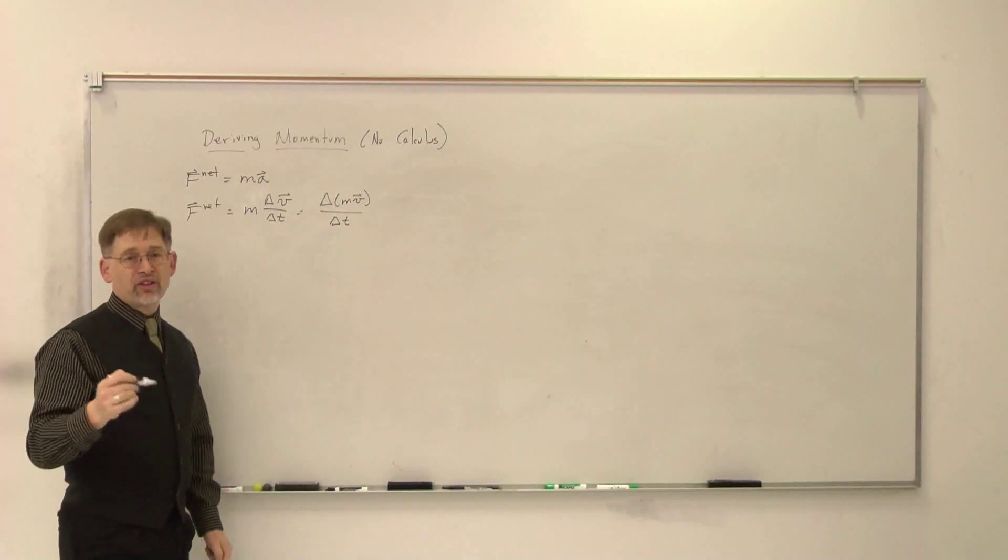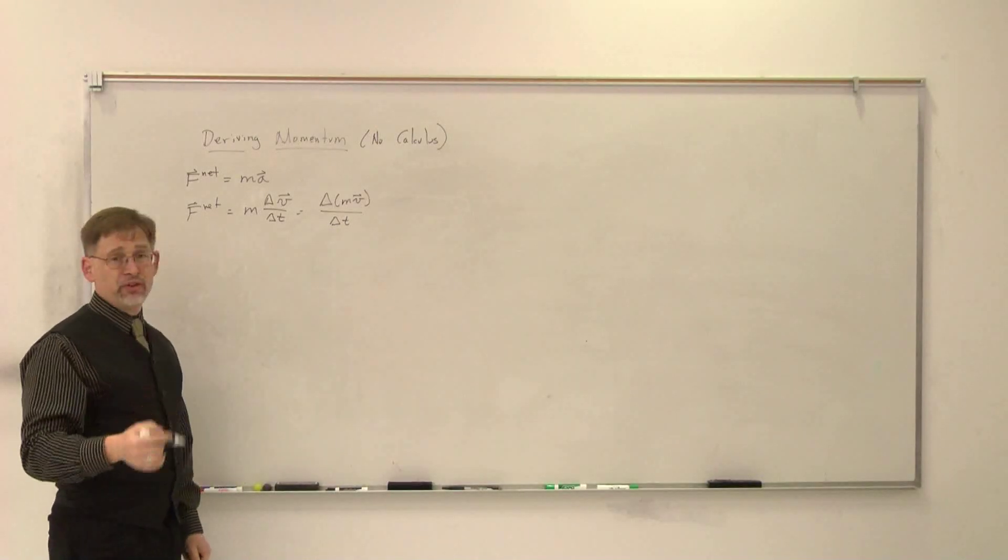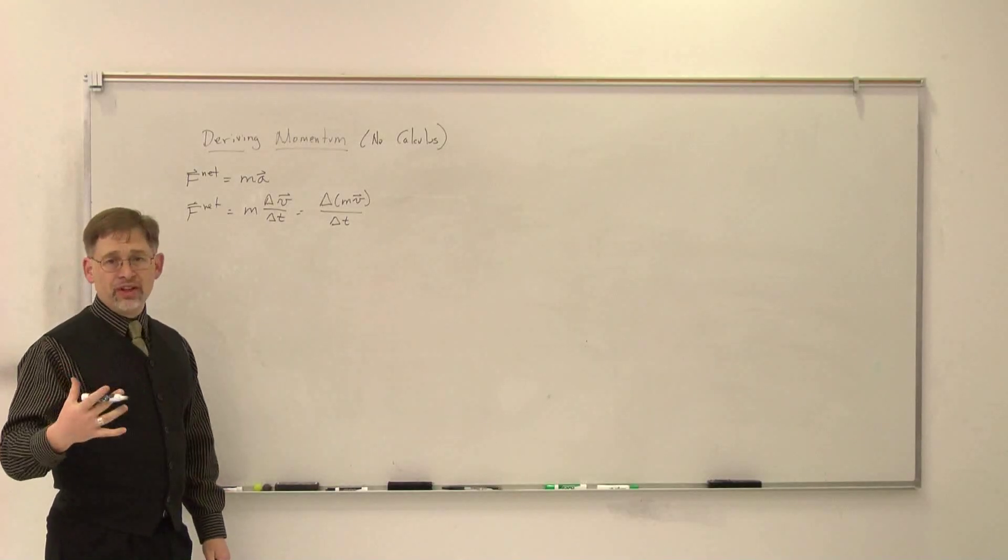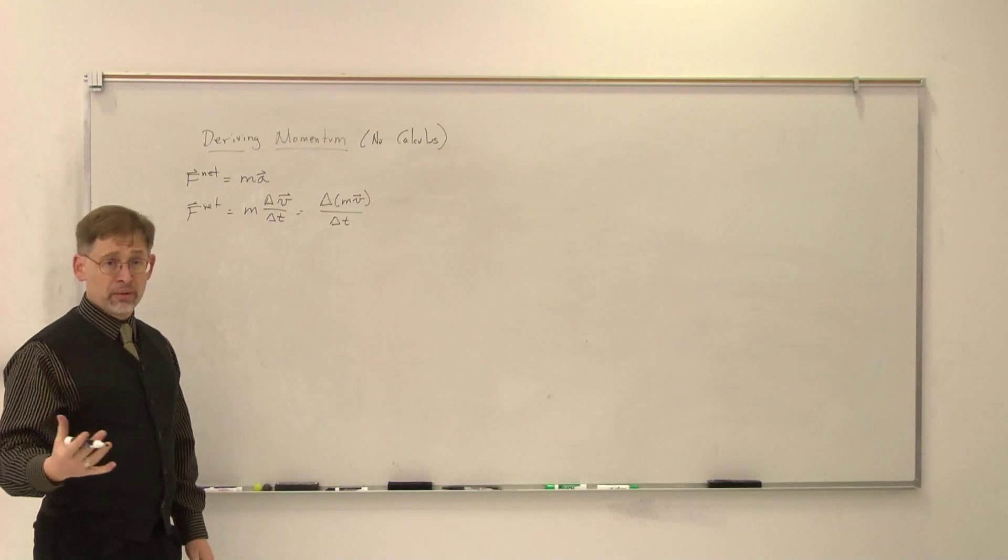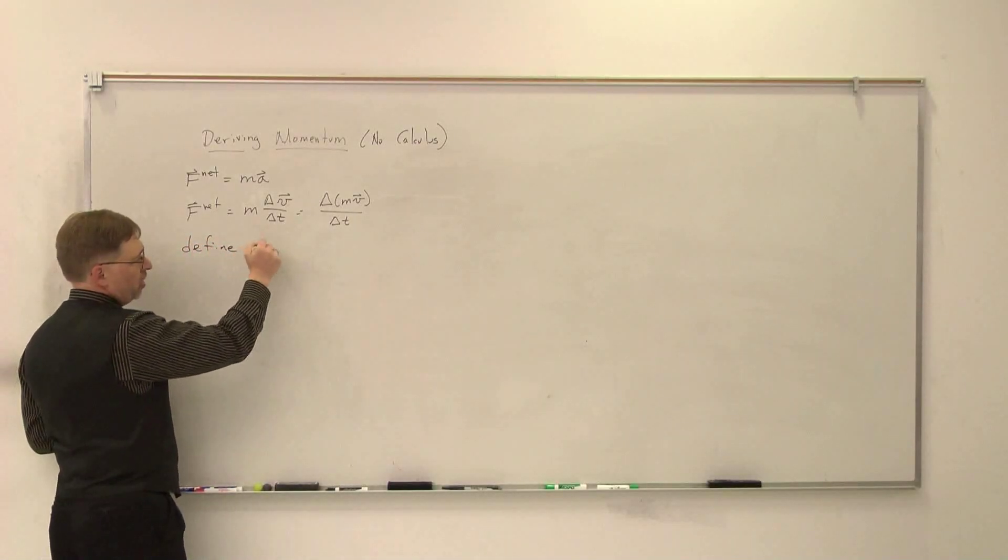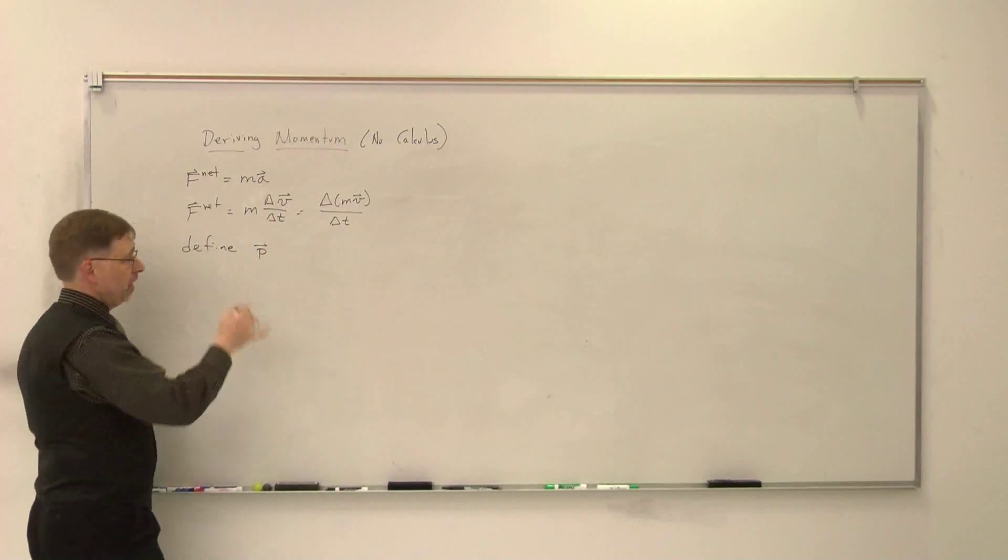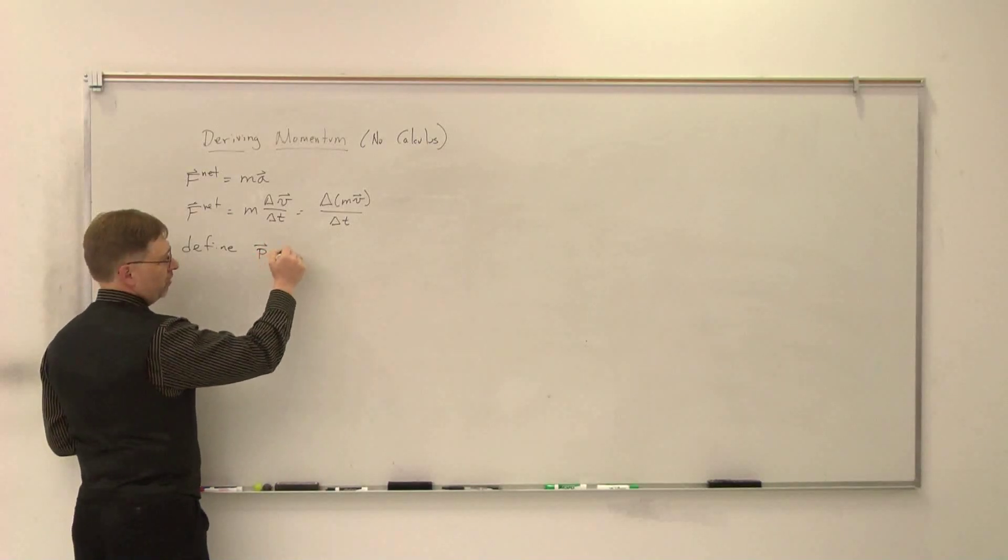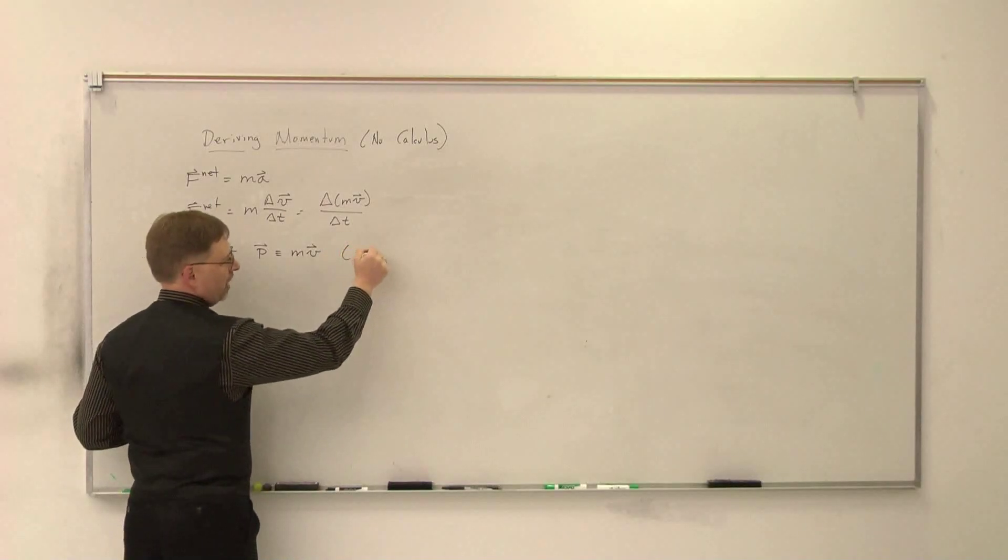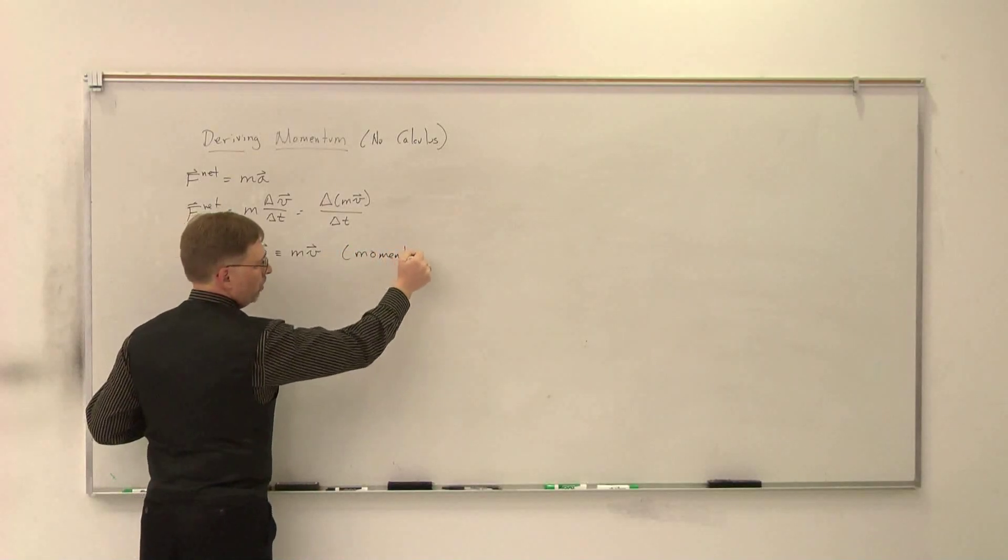But I can rewrite this as the change in M times V over the change in time. Now, that turns out to be a really useful thing to be able to do. And this is actually where Newton gets his definition of momentum. What Newton then does is Newton actually defines this quantity. We call it P now. It is the momentum. It's defined as M times V. That's actually how he defines momentum.